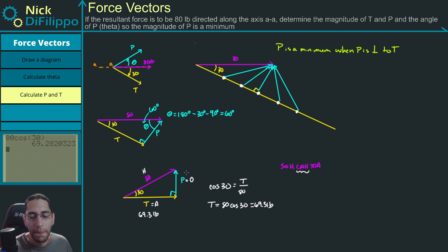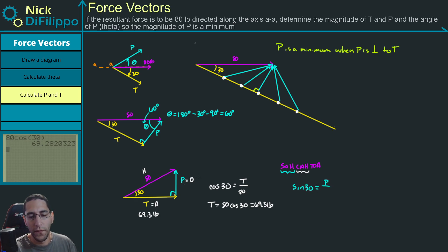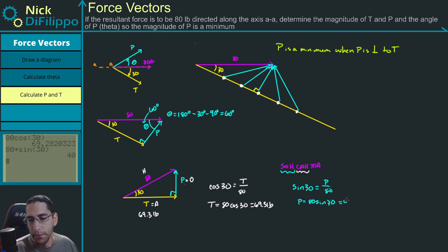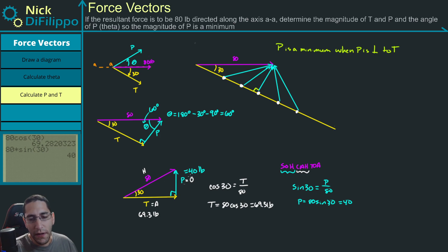I'll do the same for P. P is the opposite side, so I use sine: sine of 30 equals P over 80. So P equals 80 times sine of 30. Since sine of 30 is 0.5, P equals 40 pounds. So if P is a minimum, P is 40 pounds and T is 69.3 pounds.